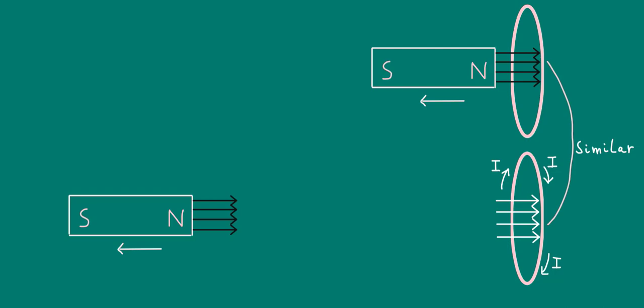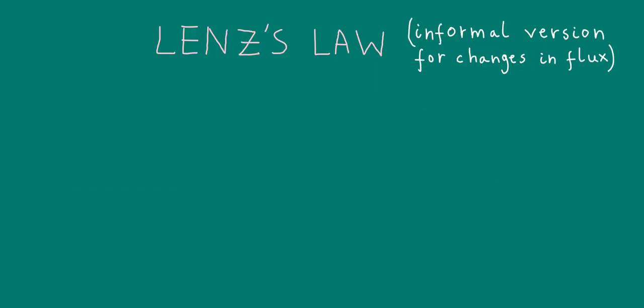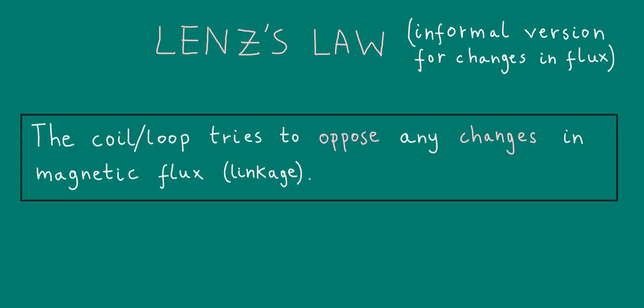This leads to another more informal way of thinking about Lenz's Law when the induced EMF is due to a change in magnetic flux. We can say that the coil or loop tries to oppose any changes in magnetic flux linkage.